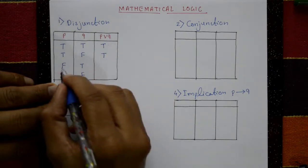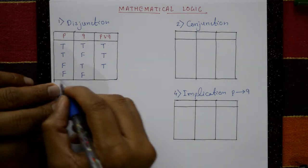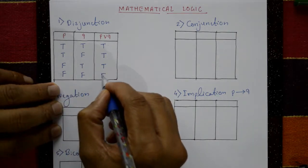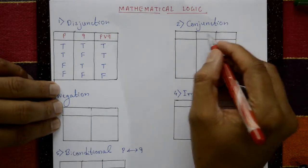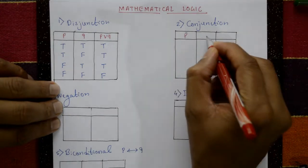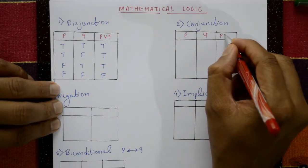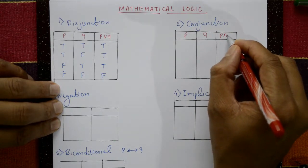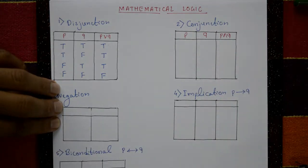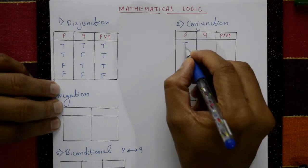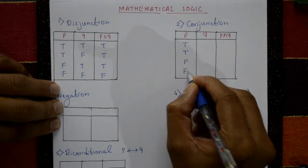False disjunction true is true, false disjunction false is false. Second one is conjunction P conjunction Q — this symbol is like an intersection symbol. The truth values for P are: true, true, false, false.